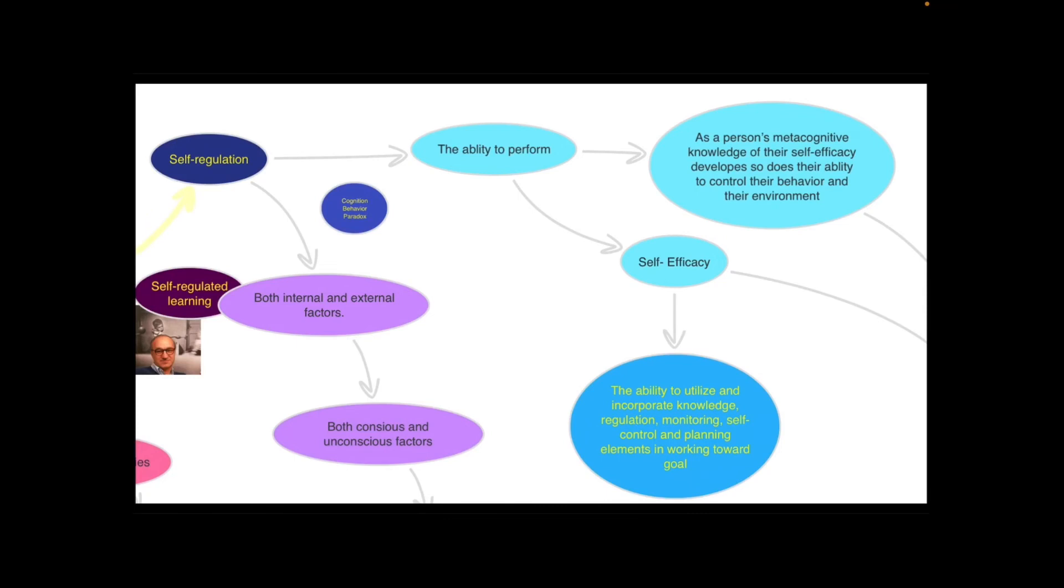And this is where that weird cognitive behavioral paradox comes into play again because as a person's metacognitive knowledge about their self-efficacy develops so does their ability to control their behavior in their environment which improves their self-efficacy. So the two processes really do work together as John Flavel pointed out that as your regulation improves your ability to understand how you were regulating yourself improves and that understanding drives that process.